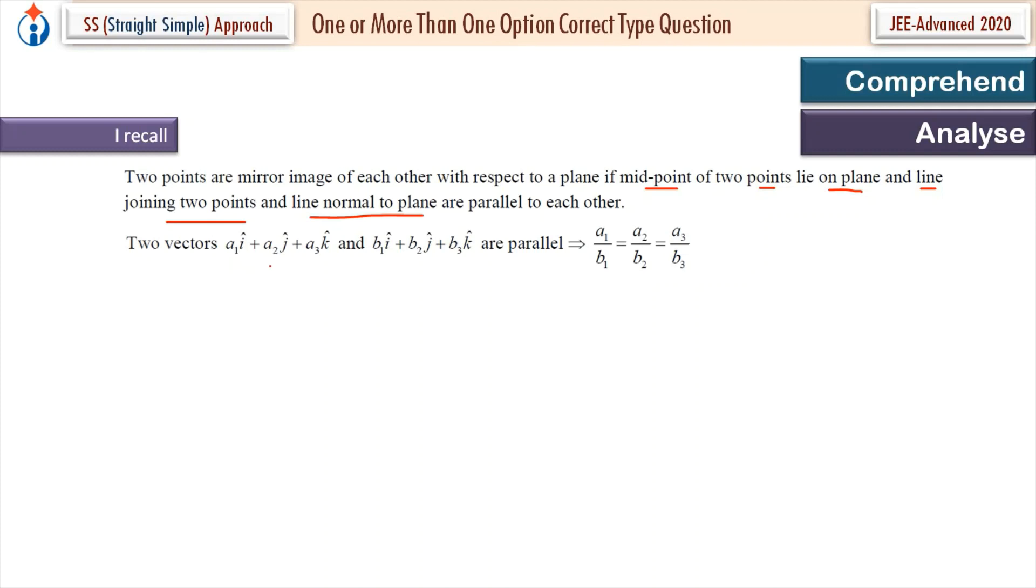Two vectors are parallel if a₁/b₁ = a₂/b₂ = a₃/b₃. A vector perpendicular to this plane, if the equation is ax + by + cz + d = 0, then a vector perpendicular to plane is ai + bj + ck.